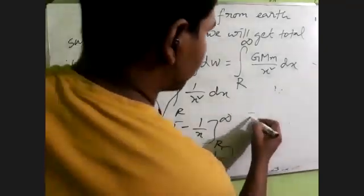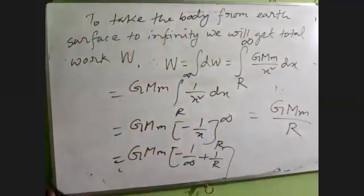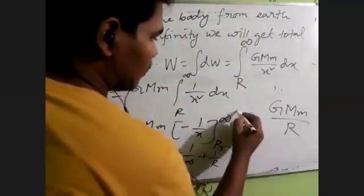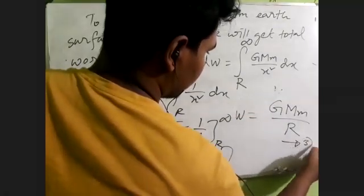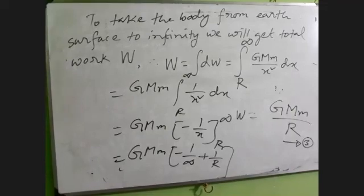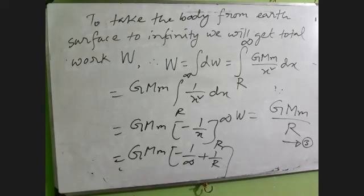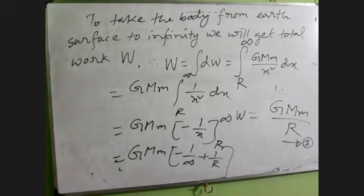1 by x squared integration gives GMm times [minus 1 by x] evaluated from R to infinity. So GMm times (minus 1 by infinity plus 1 by R). Since 1 by infinity is 0, the result is W equal to GMm by R. The power rule used here is: integral of x to the power n dx equals x to the power n+1 divided by n+1.